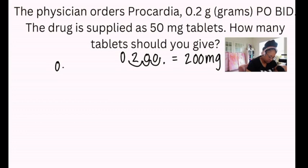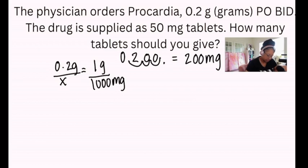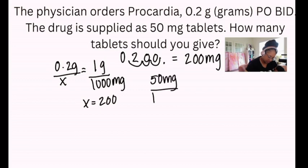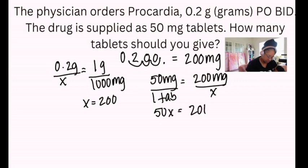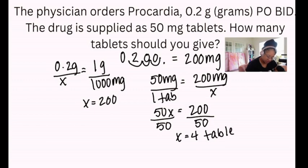Now that both sides are in milligrams, we set up the proportion: 50 milligrams per 1 tablet equals 200 milligrams over X tablets. We cross multiply and divide to isolate X, and we get four tablets to give to our patient.